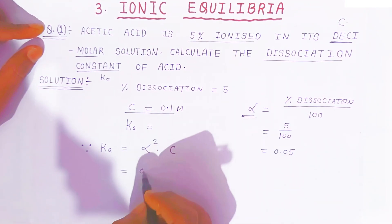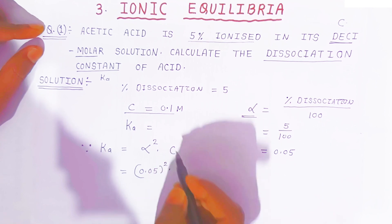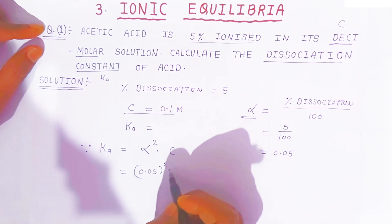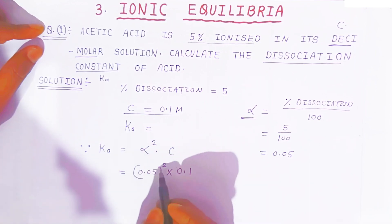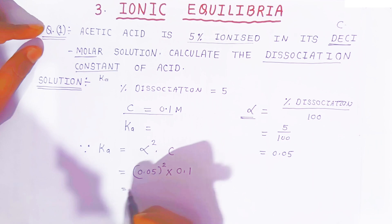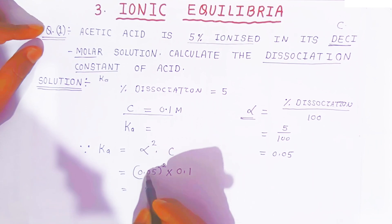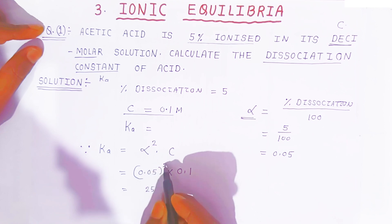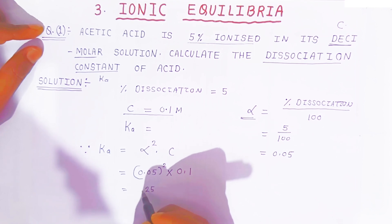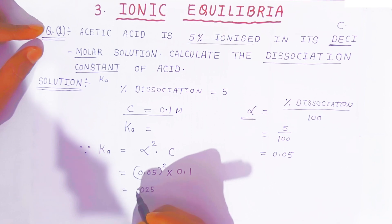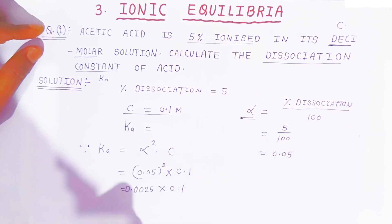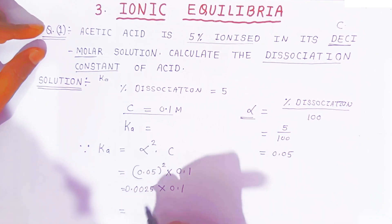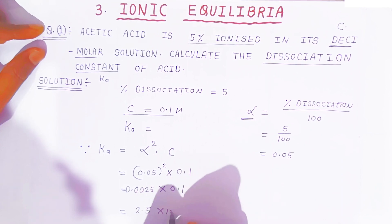Now you have alpha, that is 0.05 squared, multiplied by concentration, that is 0.1. The dot here means multiplication. Now, 0.05 squared: 5 squared is 25, but since it is 0.05 squared, you place the decimal before 4 digits, giving 0.0025. Then multiply by 0.1, which gives 2.5 into 10 to the power minus 4. This is the value of Ka.